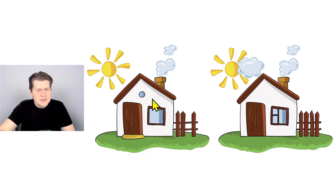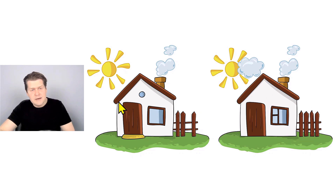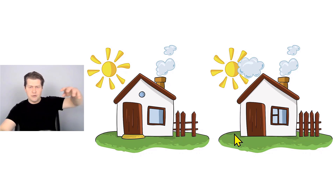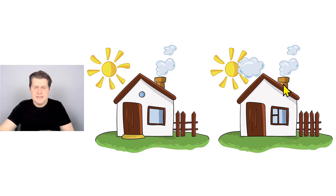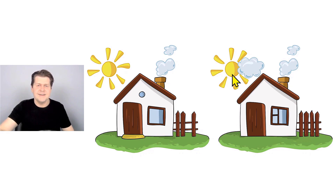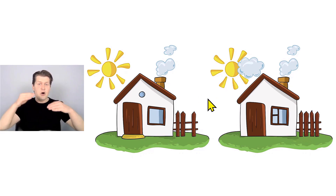In this picture on the left, this house is white. And in this picture on the right, this house is also white. This house on the left has a brown roof. And this house on the right also has a brown roof. This house in the picture on the left has green grass all around it. And this house in the picture on the right also has green grass all around it. This house has a chimney, and this house also has a chimney. This house has a door on the left and a window on the right, and this house also has a door on the left and a window on the right. In this picture on the left, you can see the sun. And in this picture on the right, you can also see the sun. So, these pictures are similar. They are almost the same.